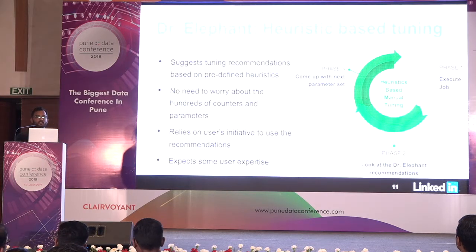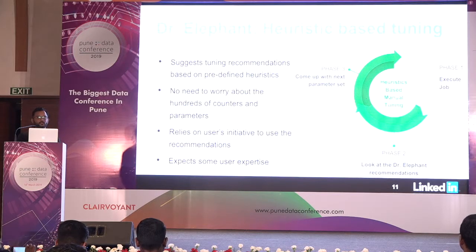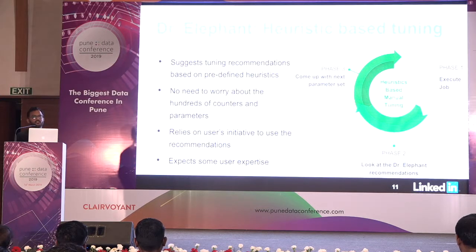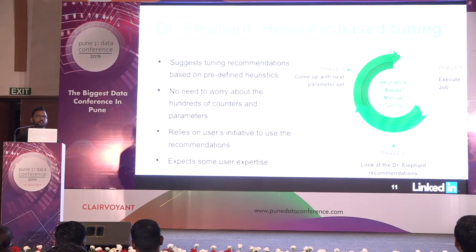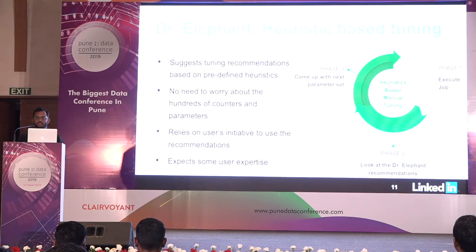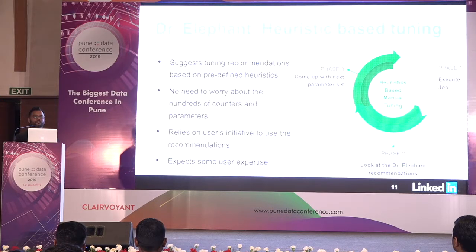Dr. Elephant is an open source monitoring and tuning tool developed at LinkedIn. It provides predefined heuristics and gives tuning recommendations. For example, for a Spark job, if peak JVM usage is only 2 GB but you allocated 10 GB of executor memory, it recommends decreasing executor memory. Or if mappers finish within two seconds — a cluster overhead — it recommends increasing the split size. Users don't need to worry about counters and parameters; they can just look at Dr. Elephant's recommendations.